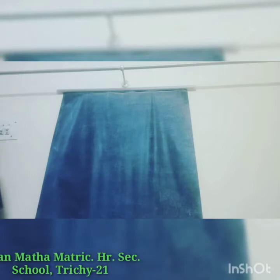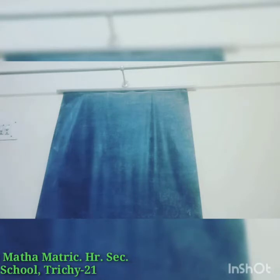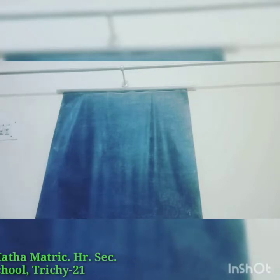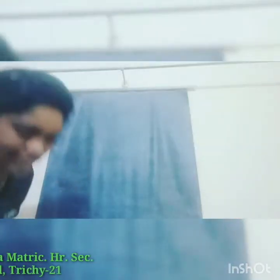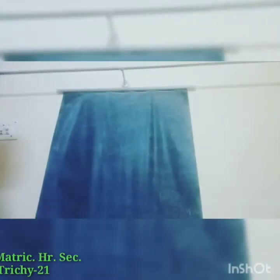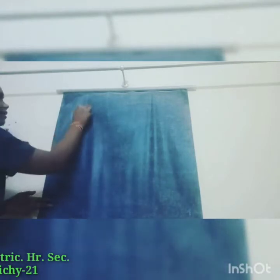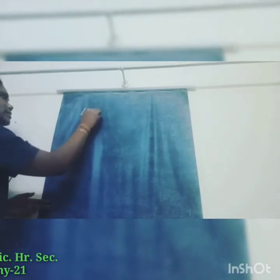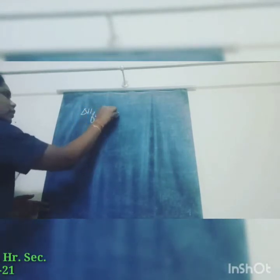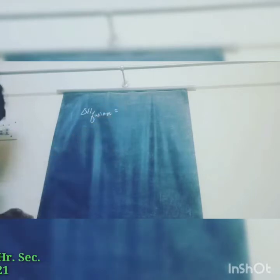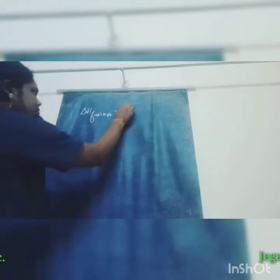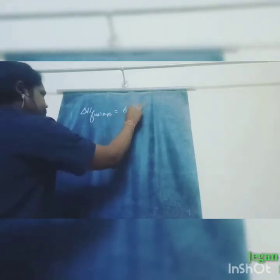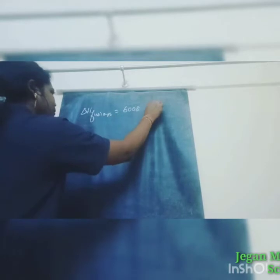So what is given in the question? ΔH fusion is given — that is the enthalpy of fusion, denoted as ΔH. So ΔH fusion is 6008 joule per mole.